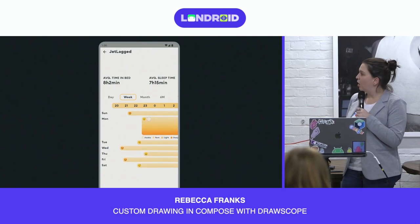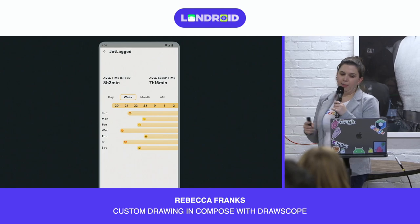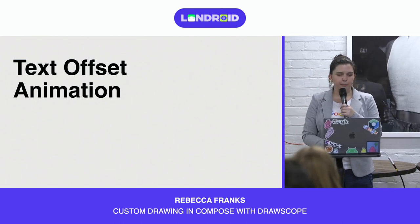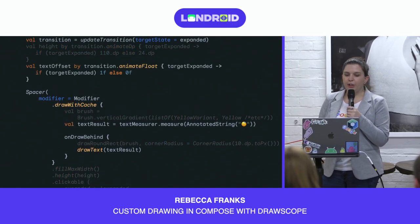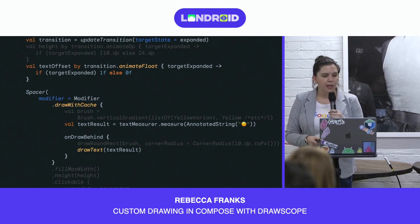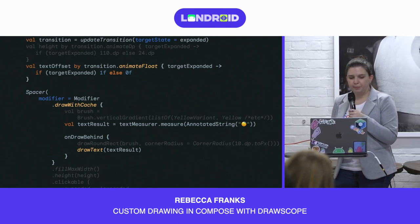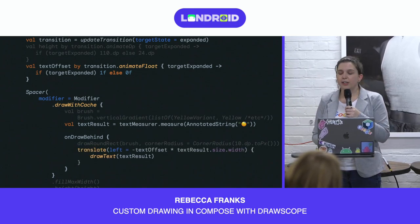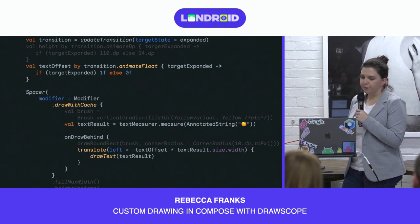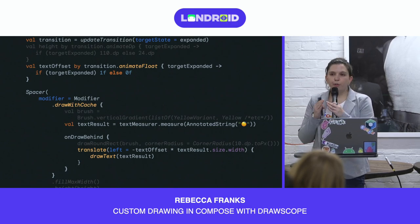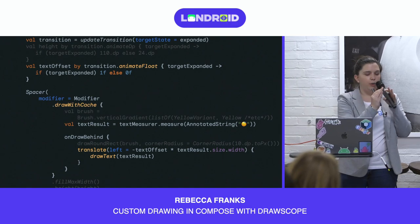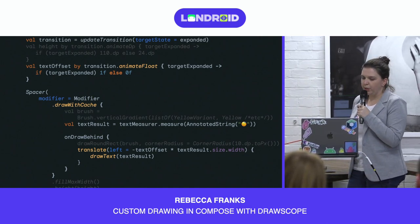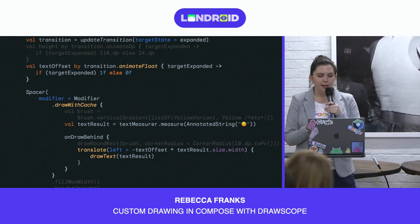The next thing we need to do is the text offset — the text needs to move with the expansion. We can create a text offset animation using the same transition object defined before. In this case, we'll animate between 0 and 1 depending on if it's expanded or not. If the text is expanded, we animate its movement using a translate function. This will translate everything drawn inside the lambda of this function, moving the start of where text is drawn to the full width of the measured text — basically inverting the offset to move the text off the bar.